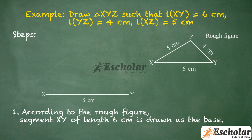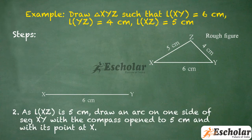Steps: First, according to the rough figure, segment XY of length 6 cm is drawn as the base. Second, as length of XZ is 5 cm, draw an arc on one side of segment XY with the compass open to 5 cm and with its point at X.